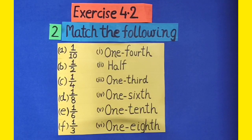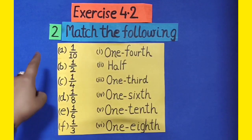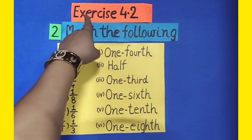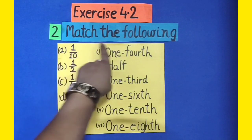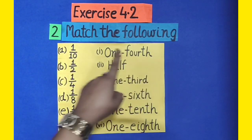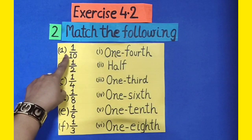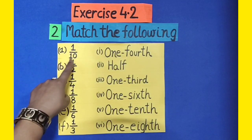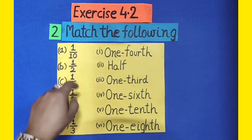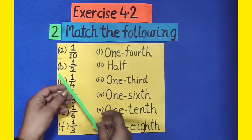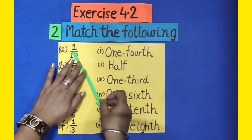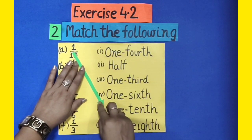Kids, let's do question number 2 of exercise 4.2 — Match the following. Part A is 1 by 10. In words, it can be written as 1 tenth. Let's match these two.